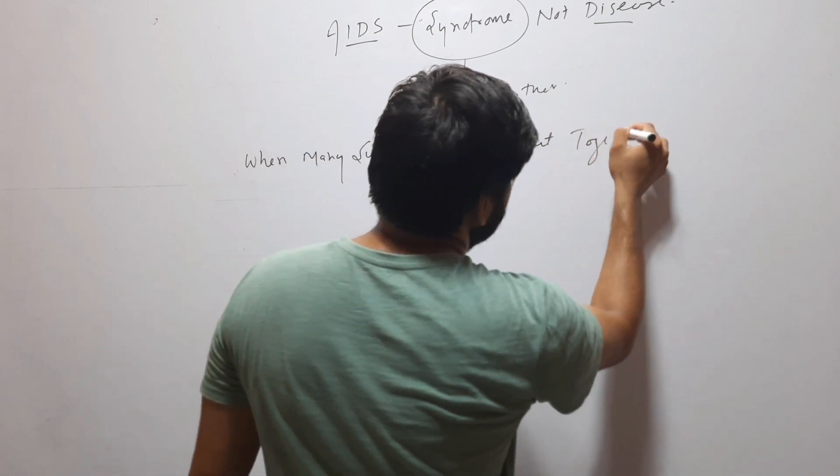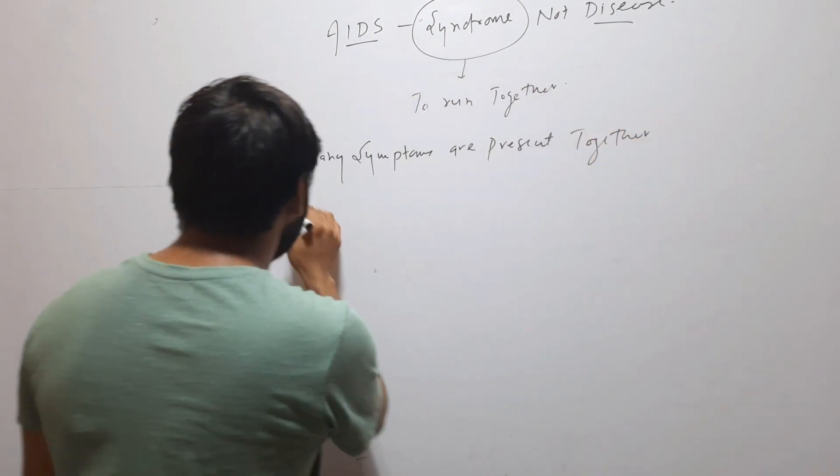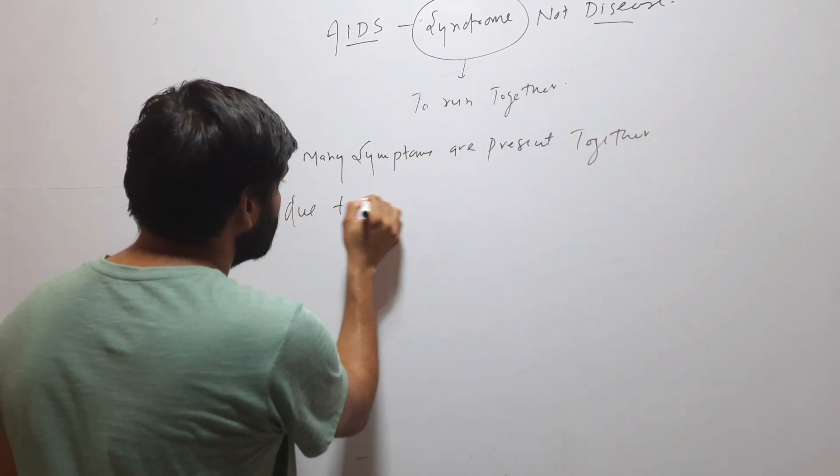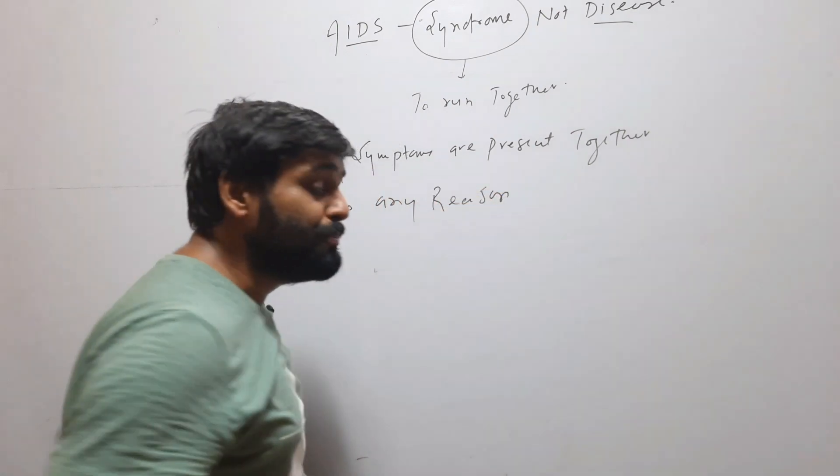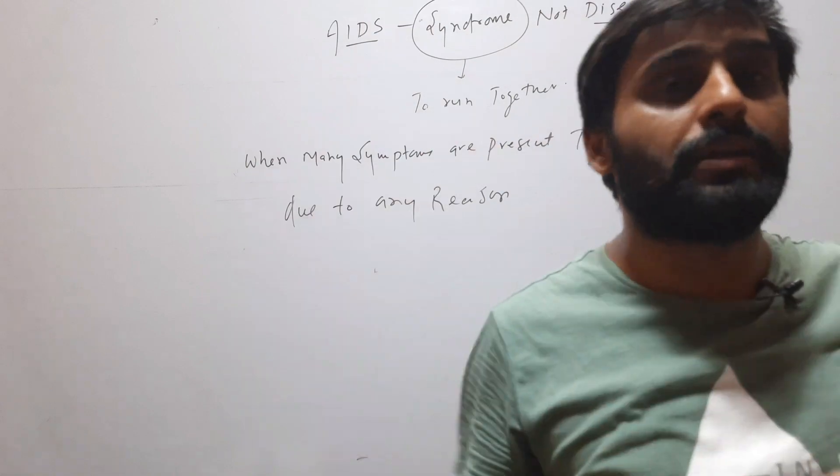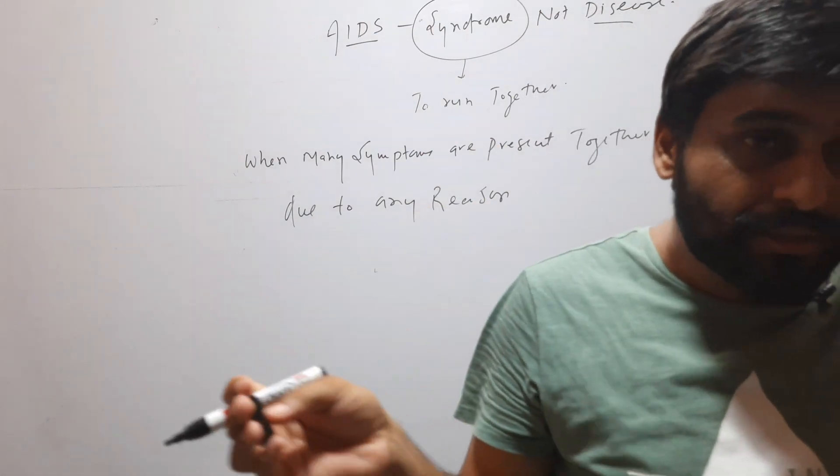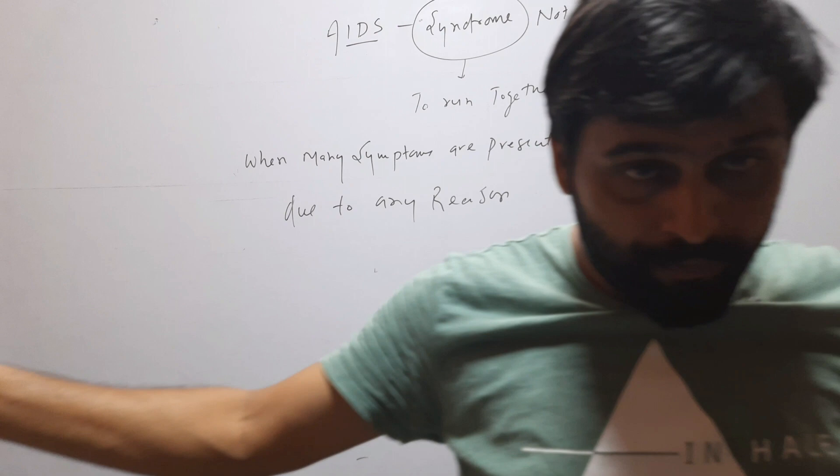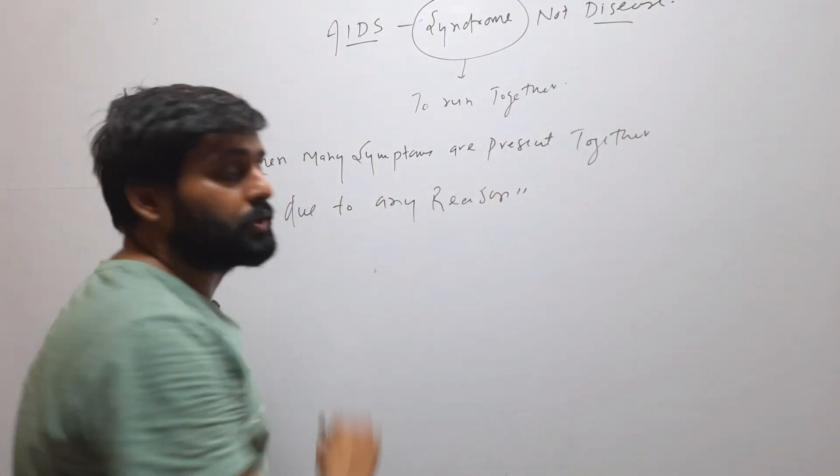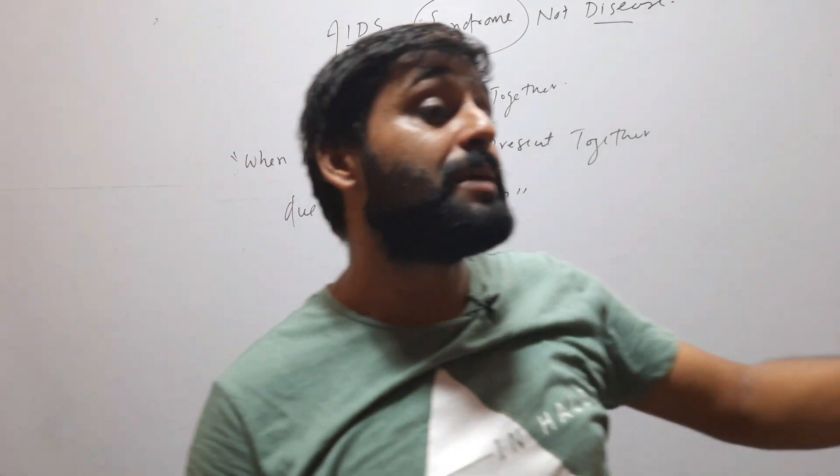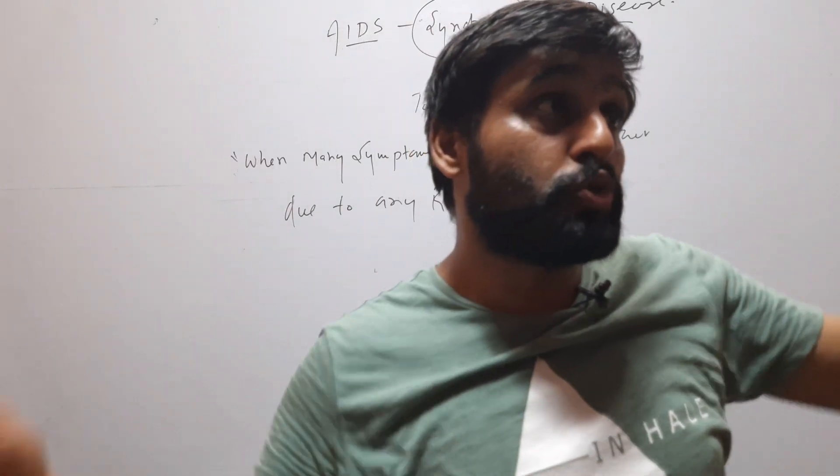So when many symptoms are present inside the body due to any reason, there are many symptoms, then this is called syndrome. And these symptoms may vary person to person. Suppose two persons have the same syndrome, so there will be many symptoms, some symptoms may vary person to person.